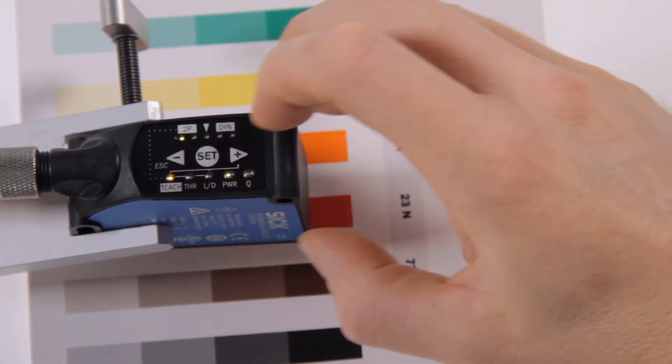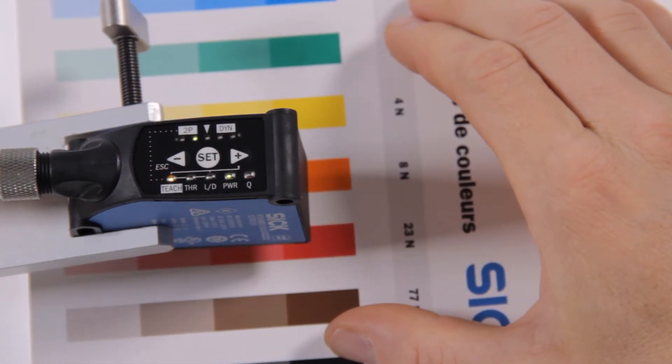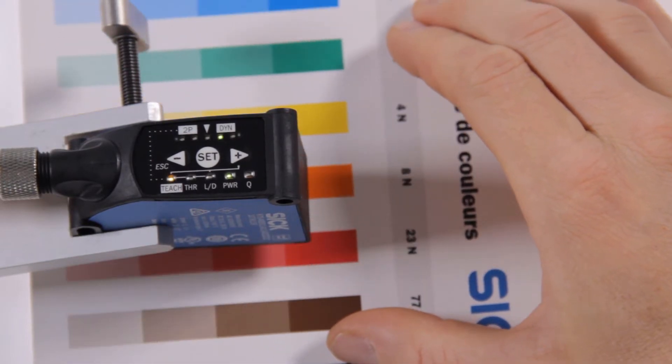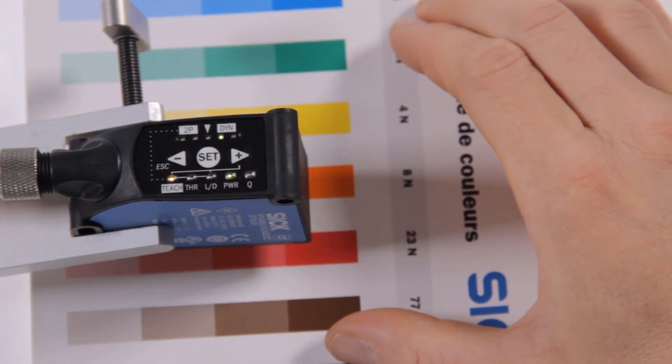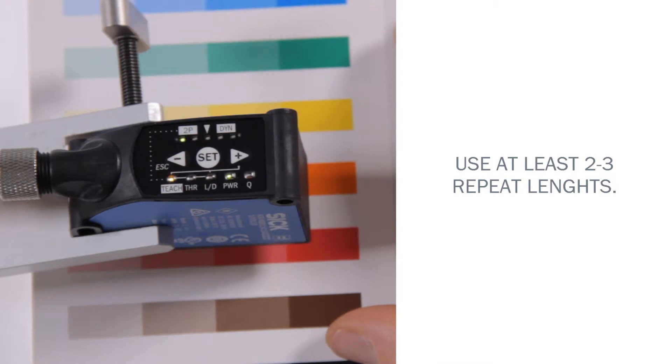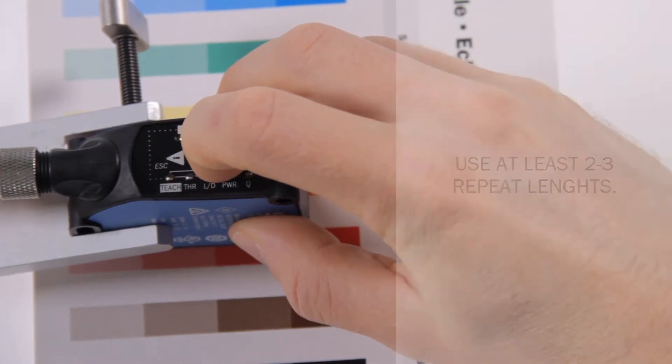Let mark and background move under the light spot for several times and stay on the background longer than the mark. We recommend to use at least two to three repeat lengths. When finished press the SET button again.